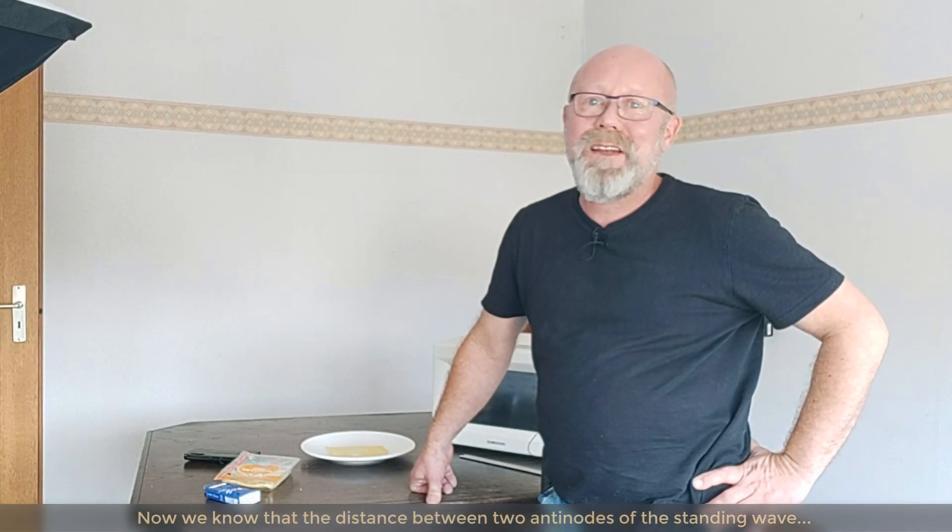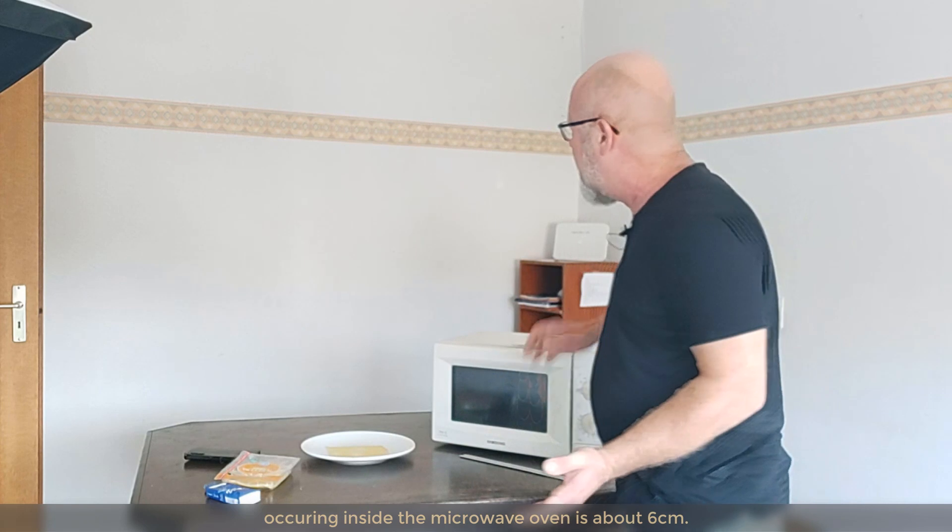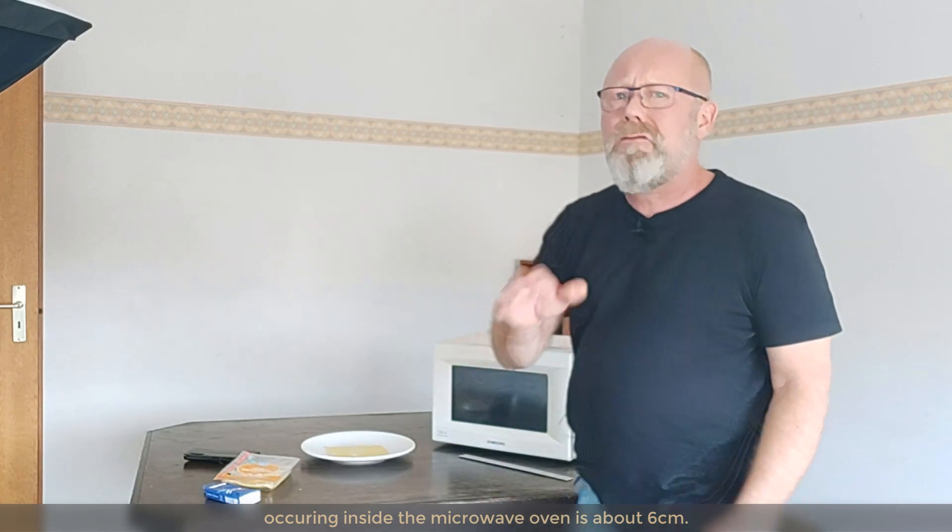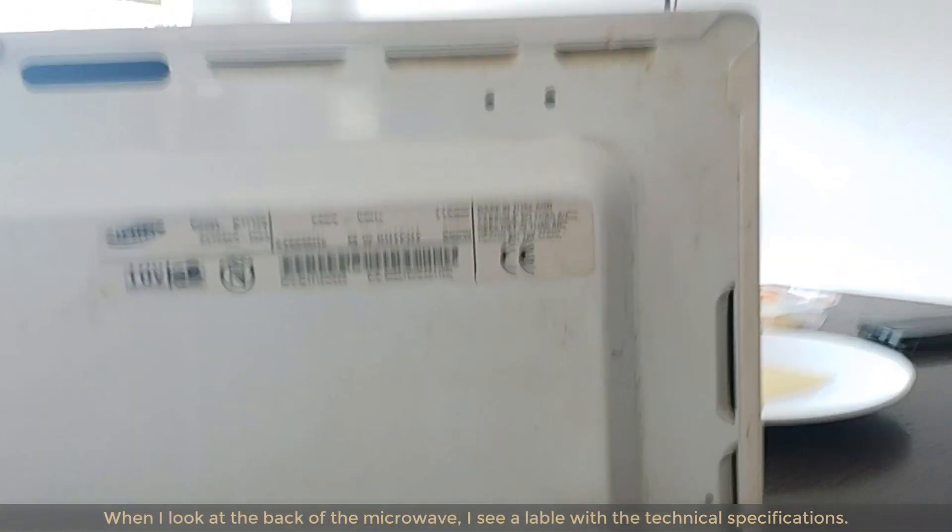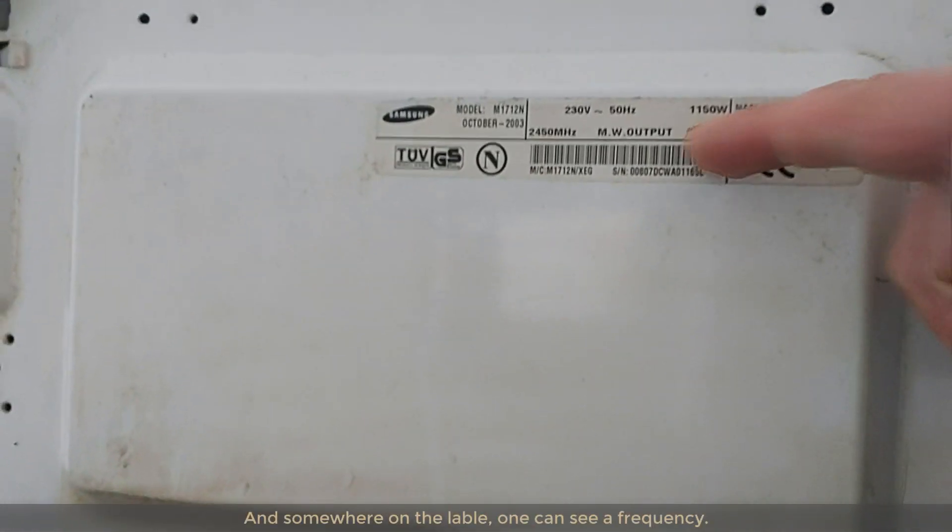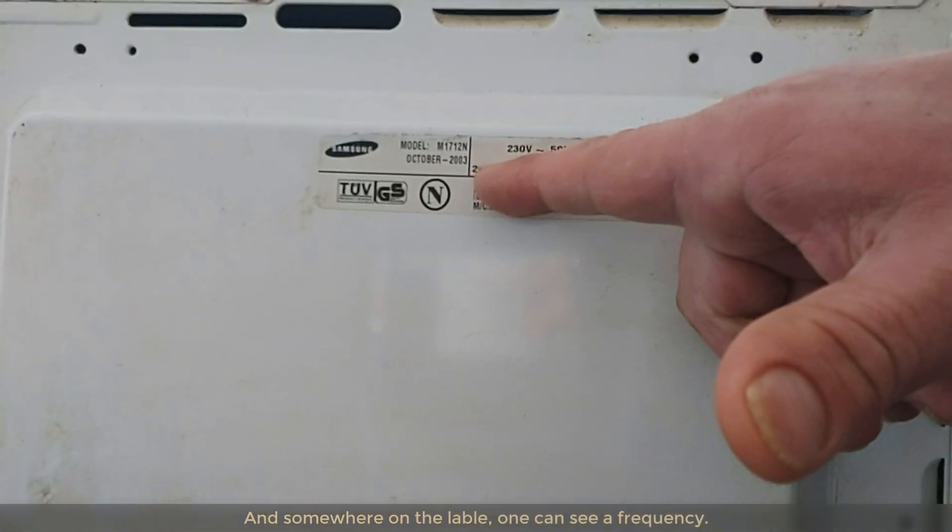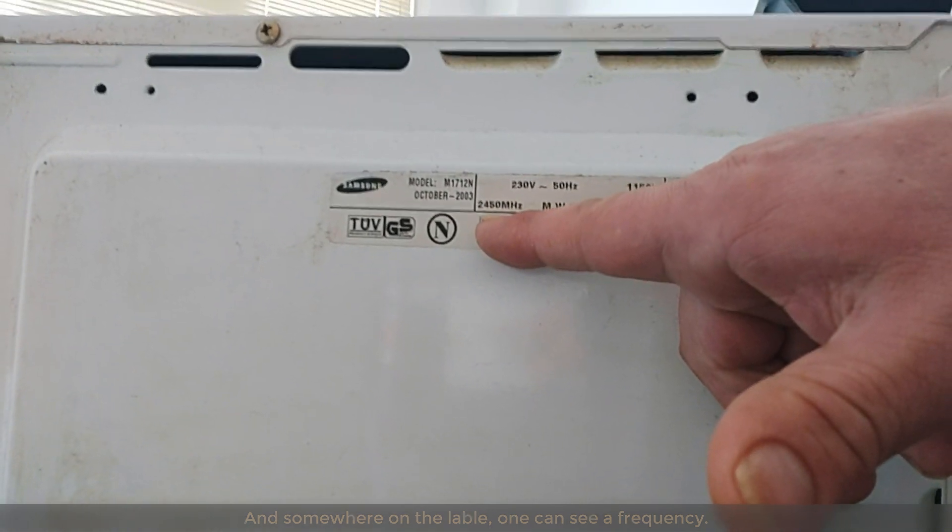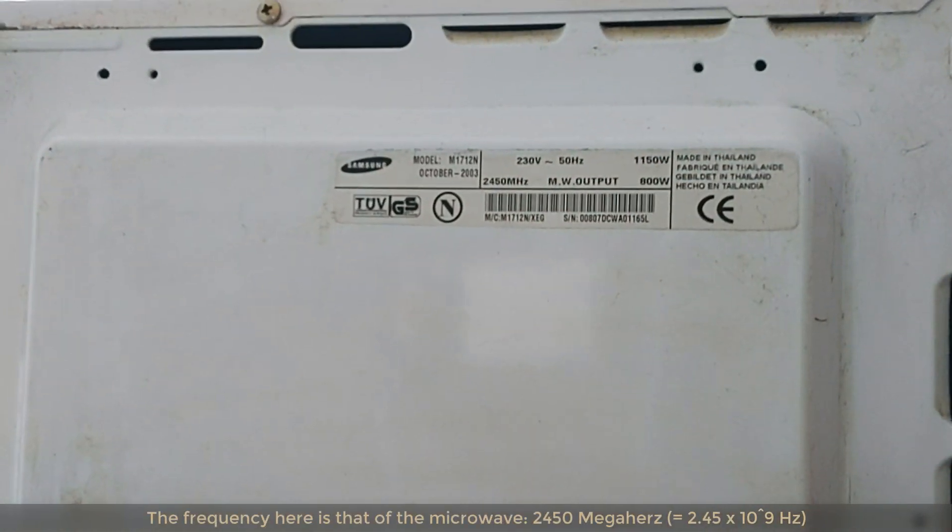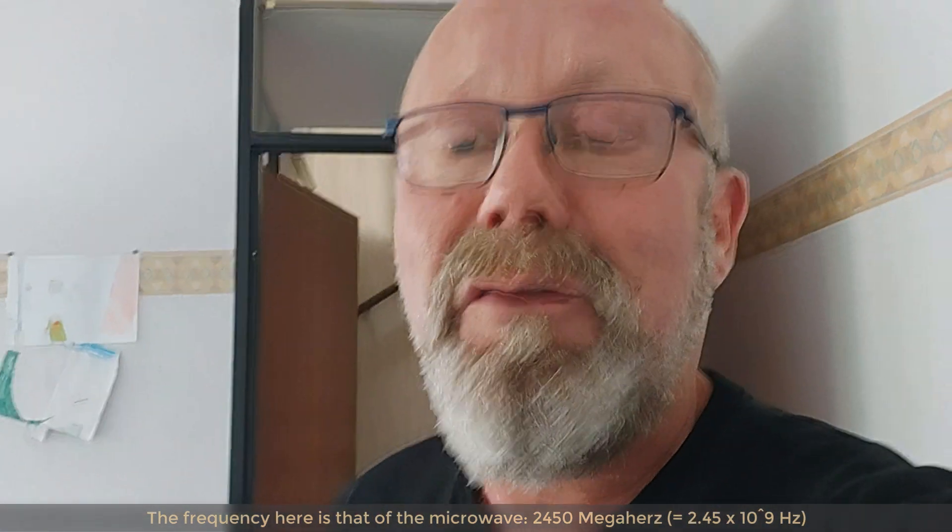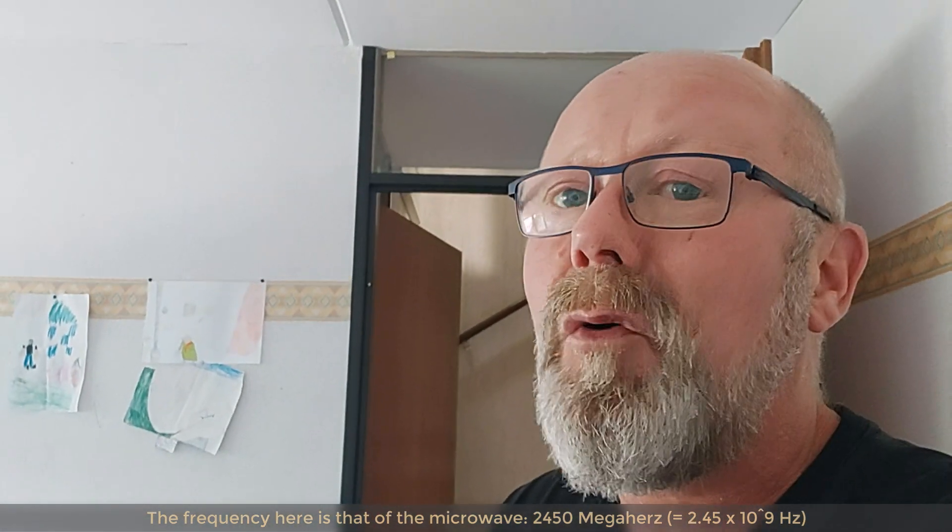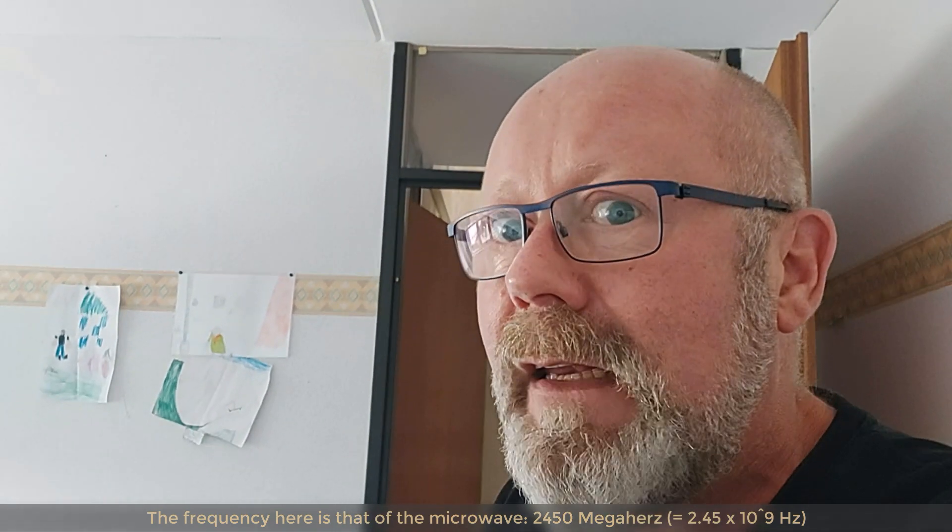Now, we know that the distance between two anti-nodes of the standing wave occurring inside the microwave oven is around six centimeters. What about the frequency of the wave? If I look at the back of the microwave, I see a label with all the technical specifications. And somewhere on the label, you'll see a frequency. And that's the frequency here of the microwave. So, 2450 megahertz. That is 2.45 gigahertz. That is 2.45 by 10 to the 9 hertz.